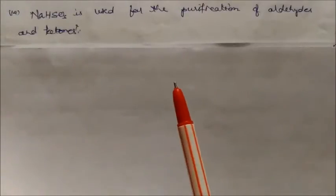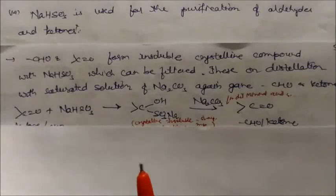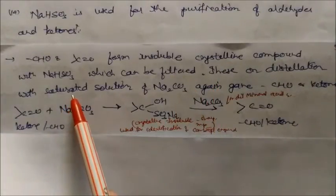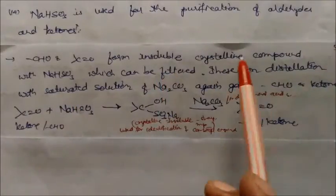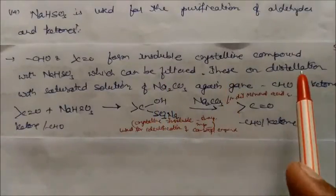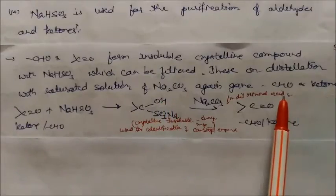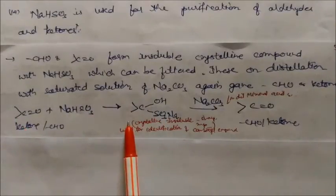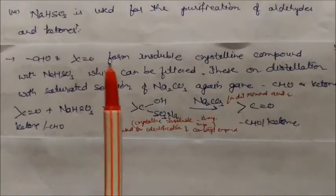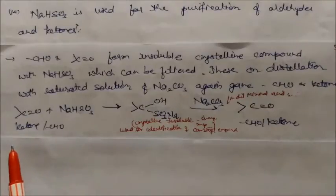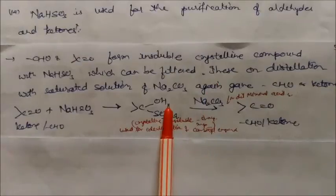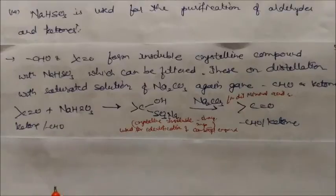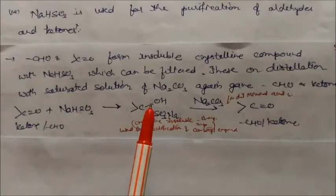Sodium bisulfite is used for the purification of aldehydes and ketones. Aldehydes and ketones form insoluble crystalline compounds with sodium bisulfite, which can be filtered out. These crystalline compounds on treatment with a saturated solution of sodium carbonate or mineral acid again yield the aldehyde or ketone. These crystalline adducts have a sharp melting point, which is also used for identification of the carbonyl compound.